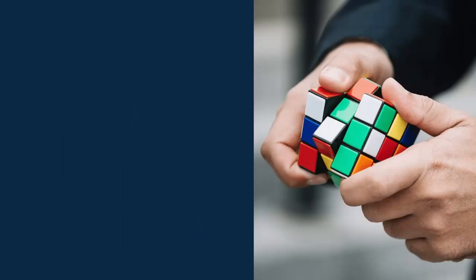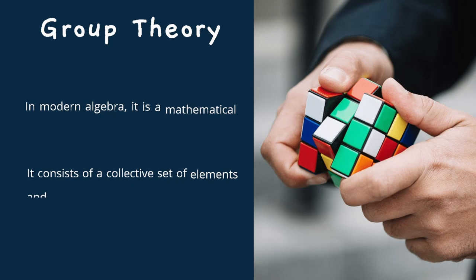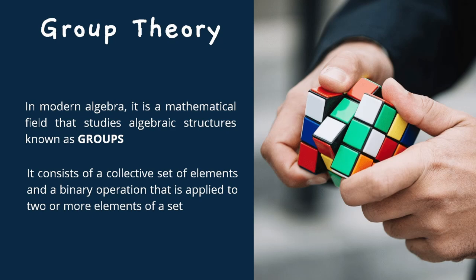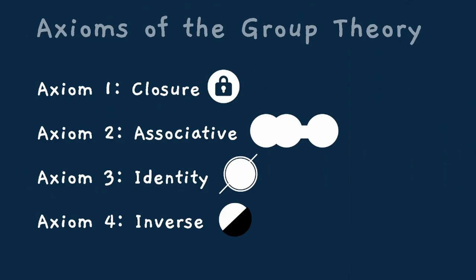These are the mathematical terms that the Rubik's Cube can visualize. Let us now move on to group theory. In modern algebra, it is a mathematical field that studies algebraic structures known as groups. In other words, it is a set of elements defined with an operation that integrates two of its elements to form a new element that will satisfy these axioms. These axioms are the set of postulates that a group must follow to satisfy group theory. If any of these axioms are not satisfied, then the set is not a group.